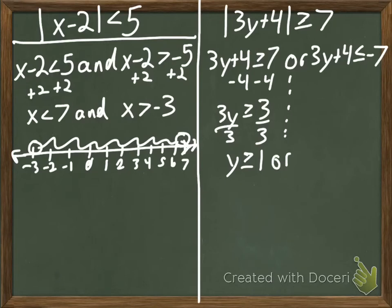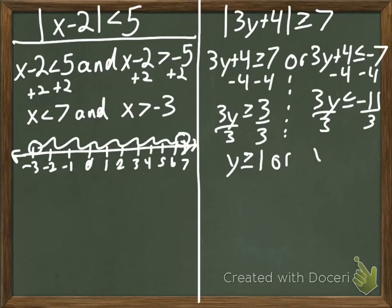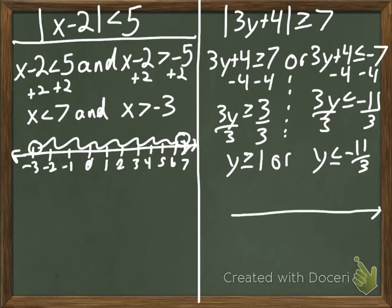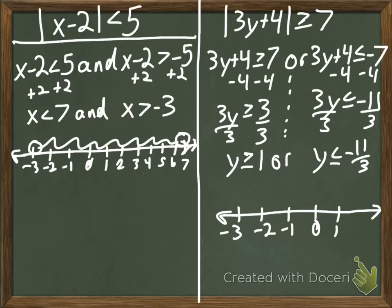OR — subtract 4 — 3y less than or equal to negative 11; divide by 3. Or y is less than or equal to negative 11 over 3. So we go to graph. Negative 11 over 3 — I know that's somewhere between negative 3 and negative 2. So: negative 3, negative 2, negative 1, 0, 1, 2. Y greater than or equal to 1 — right here. And then here's about where that should be, that negative 11 over 3. And there we go.